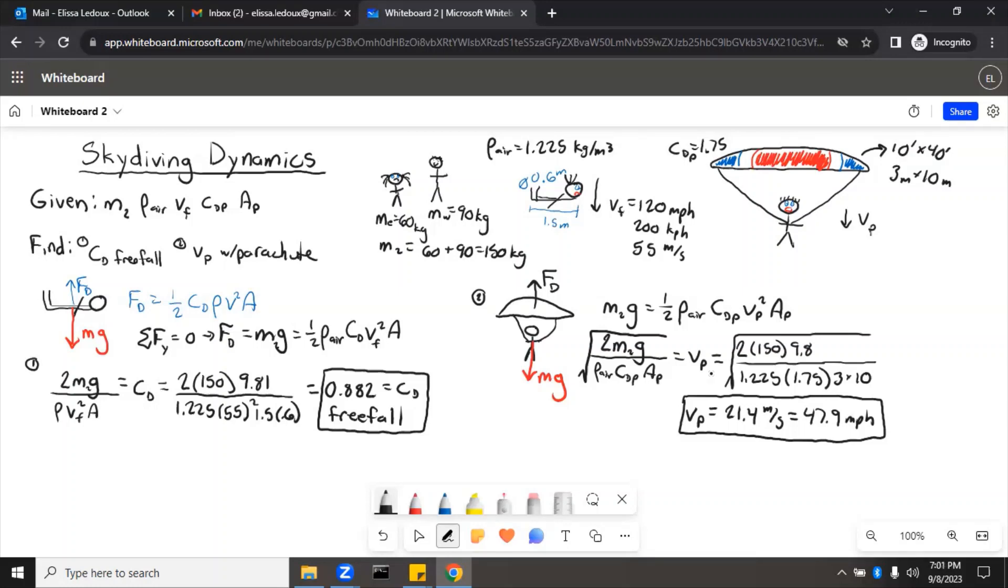But also, one thing to note is that this terminal velocity, this is the descent velocity, so it can also be affected by wind. If you have a crosswind or if you have a wind that is blowing sort of up or sort of down, that will all affect those. But the nice thing is that at least you do have that parachute slowing you way down from the 120 miles per hour to under 50 miles per hour. So that is how to calculate skydiving dynamics.